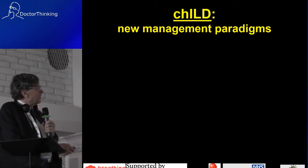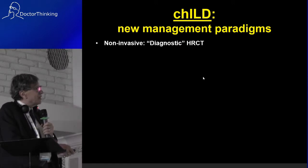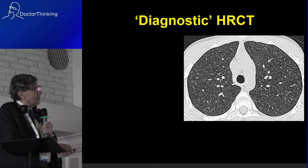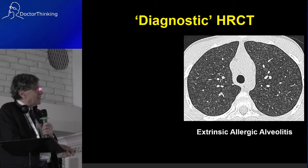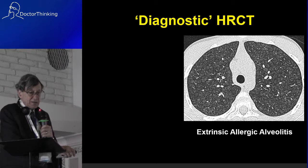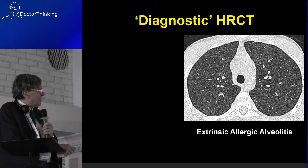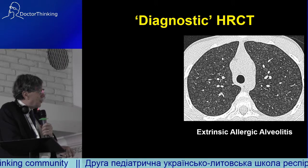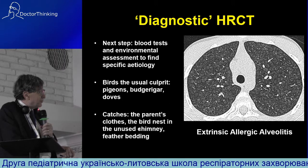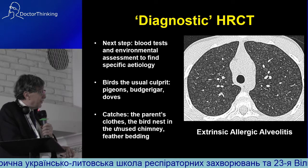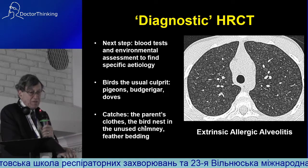What about diagnostic CT scans? You can see here a lot of soft, fluffy centrilobular nodules — this is extrinsic allergic alveolitis. You need a specific diagnosis, blood tests, and environmental sampling to find the cause. Birds are the usual culprit, but beware the parent who is a pigeon fancier and brings allergen on their clothes, the bird nest in the unused chimney, or feather bedding.